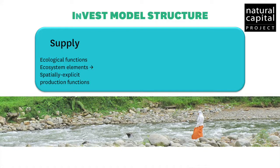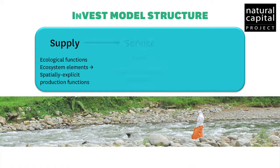We start with ecosystem service supply — the quantity of service that's feasible for a given landscape to provide. Then we use the location, activities, and preferences of beneficiaries of that service to translate the service all the way from supply to value. This framework allows us to take the social context and social values into account.